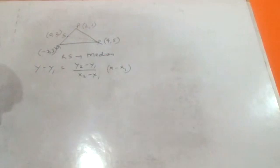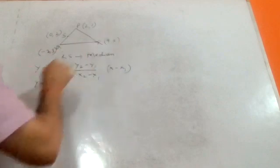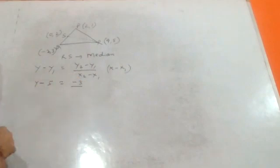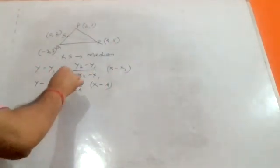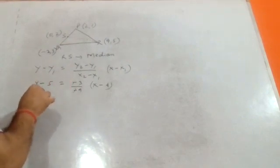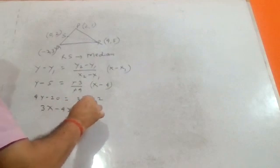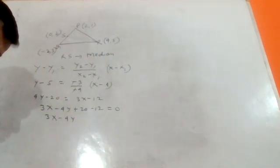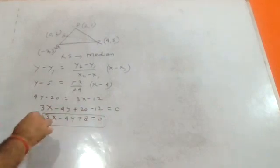Using the two-point form: y minus y1 equals (y2 minus y1) upon (x2 minus x1) times (x minus x1). With x1 y1 as R at four comma five and x2 y2 as S at zero comma two, we substitute: y minus 5 equals (2 minus 5) upon (0 minus 4) times (x minus 4). Cross multiplying gives 4y minus 20 equals 3x minus 12, which simplifies to 3x minus 4y plus 8 equals zero.